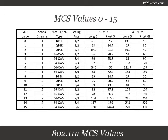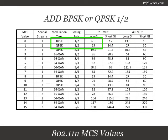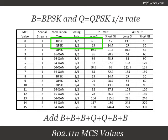Don't worry — you don't have to memorize every single one of them. Just memorize 4 values and my magic formula and you are all set. These are the only 4 data rates you need to memorize. To move down the data rates for a given spatial stream, all you have to do is add the BPSK data rate or the QPSK at one-half data rate. Let B stand for BPSK and Q stand for QPSK at one-half. The formula for going down the list is: B + B + Q + Q + B + B.